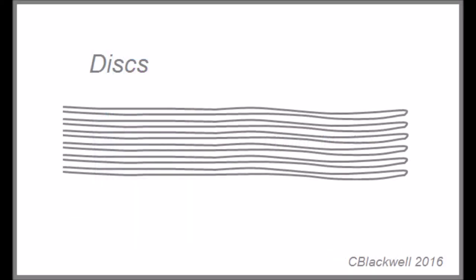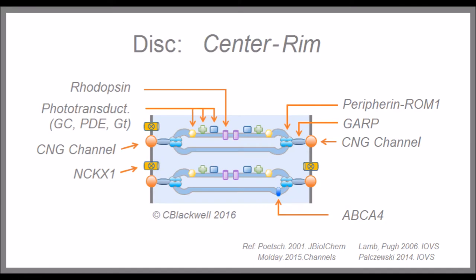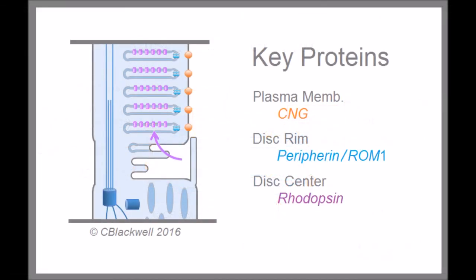To get a better idea of their shape, this is a tracing of discs from an electron micrograph. Within each disc, different molecules have specific locations. For example, rhodopsin and the molecules of phototransduction are located in the center part of the disc, while others are located at the edges.